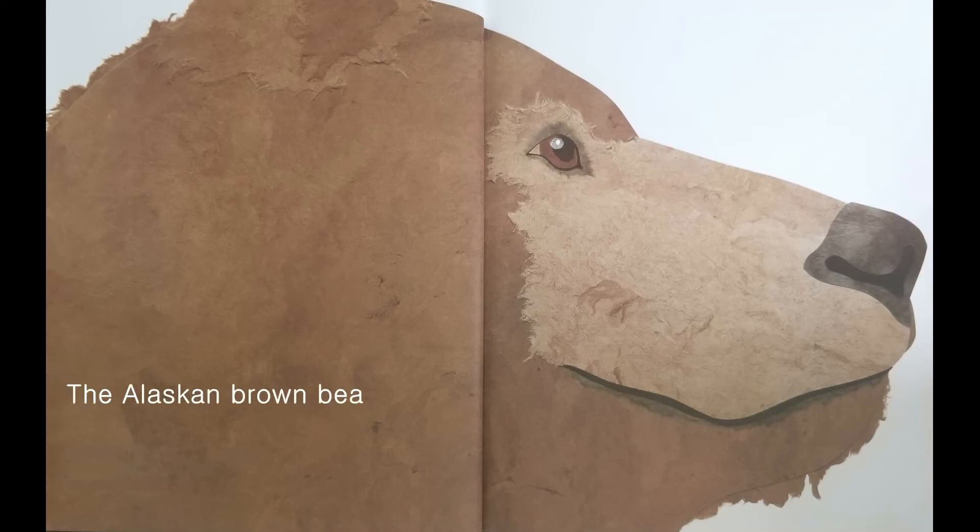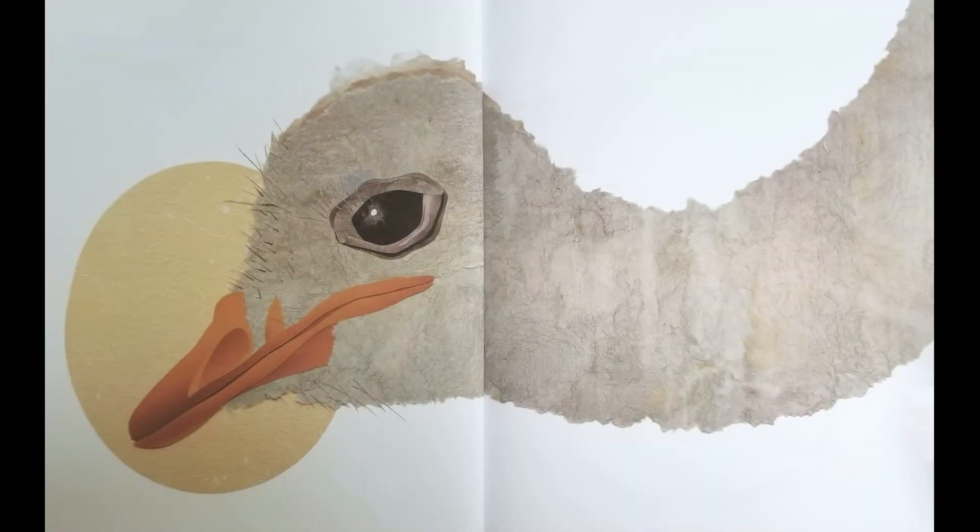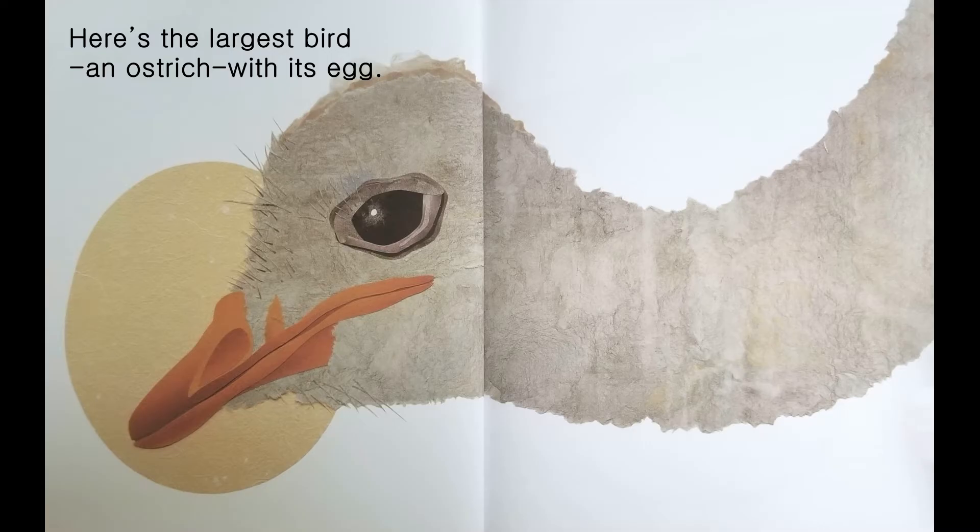The Alaskan brown bear is the largest meat-eating animal that lives on land. Height 13 feet. Weight 1,700 pounds. Here's the largest bird, an ostrich, with its egg. Height up to 9 feet. Weight 340 pounds.